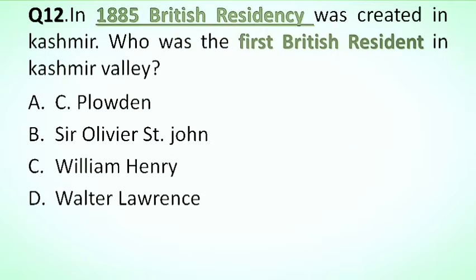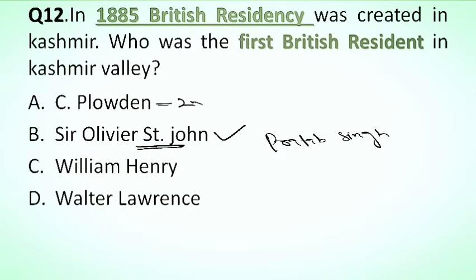Next question is: in 1885, a British residency was created in Kashmir. Who was the first British resident in Kashmir Valley? Options: A. C. Paladin, B. Sir Oliver St. John, C. William Henry, D. Walter Larkins. The correct answer is Sir Oliver St. John. He was the first British resident of Kashmir Valley. The residency was created during the time period of Pratap Singh. And Paladin was the second British resident in Kashmir Valley.